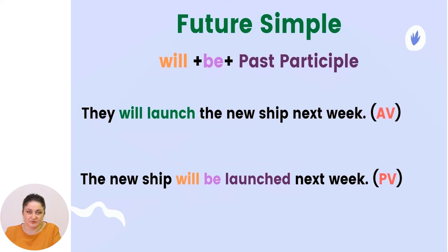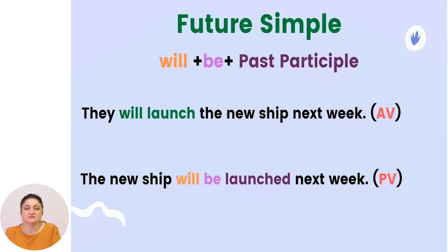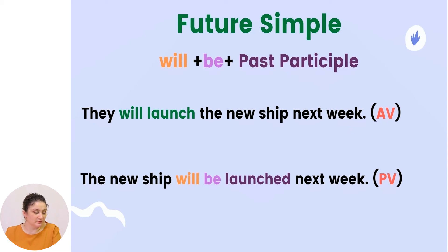Future simple. To change a future simple sentence into a passive one, we have to use 'will' plus 'be' plus past participle. Example: 'They will launch the new ship next week.' becomes 'The new ship will be launched next week.'